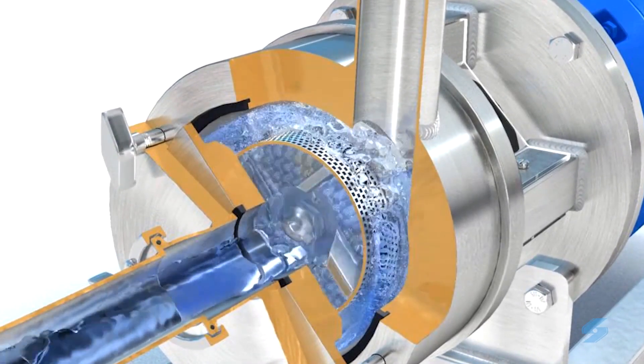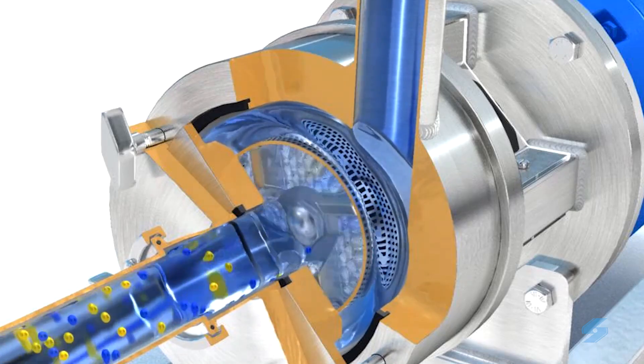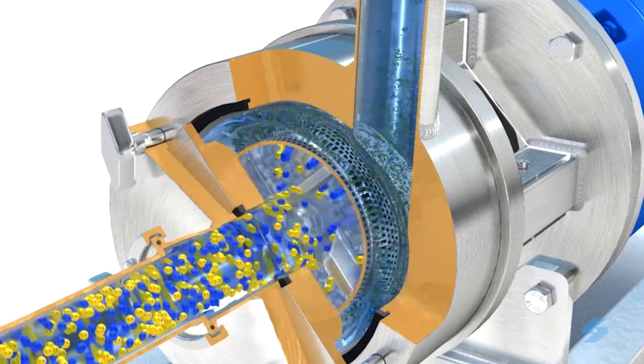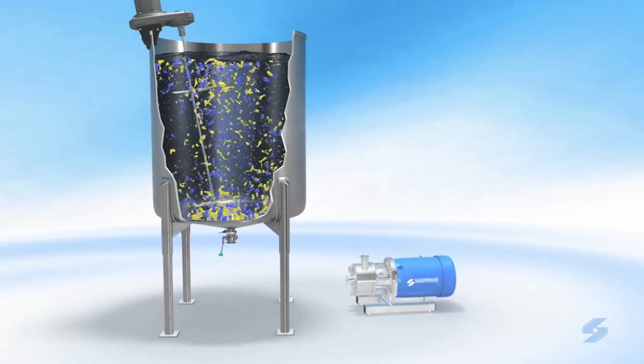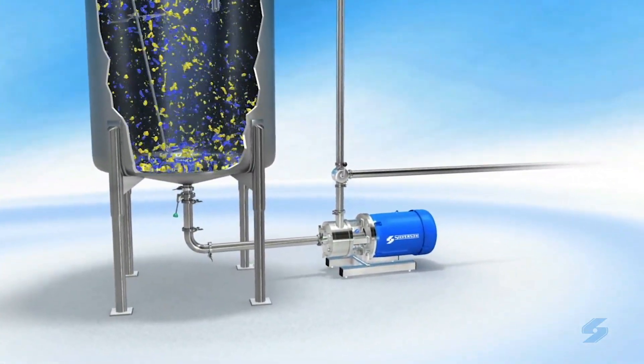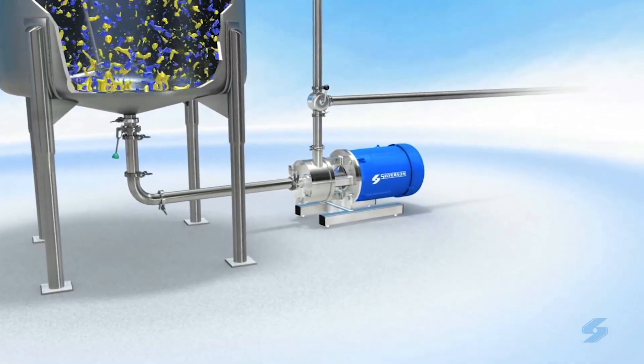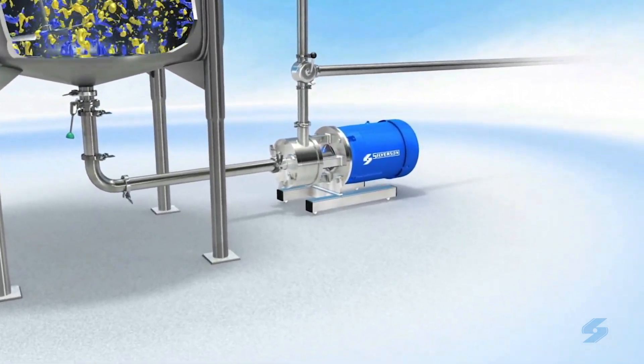The in-line mixer's energy is concentrated on the small amount of product in the mixing chamber, allowing a relatively small mixer to process large volumes. Easily added to an existing process, a Silverson in-line mixer can dramatically increase productivity, greatly reducing the mixing time while improving the product quality and uniformity.